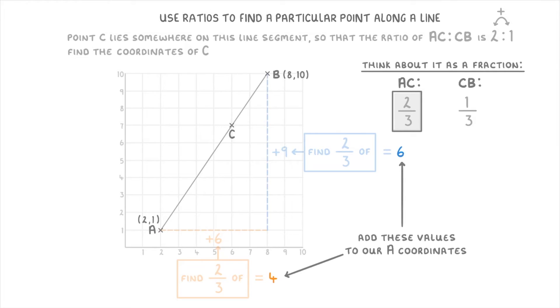Then all we're going to have to do is add these values to our point A coordinates. And that should give us the coordinates of C. So if we add 4 to A's x-coordinate of 2, that will give us 6 as the x-coordinate of C. And if we add 6 to A's y-coordinate of 1, that will give us 7 as the y-coordinate of C.